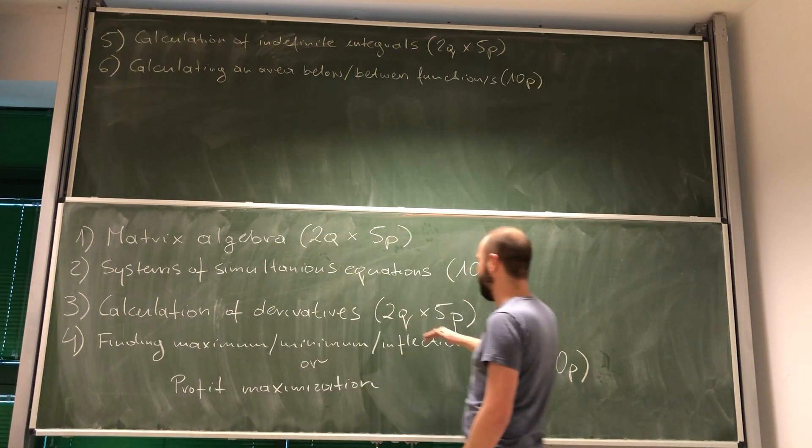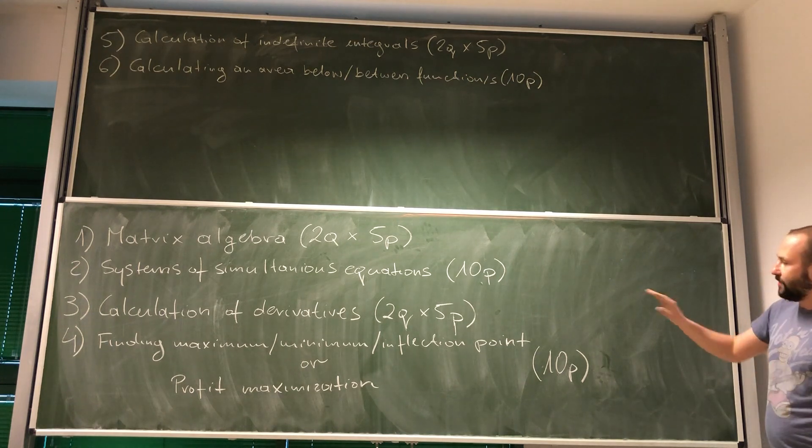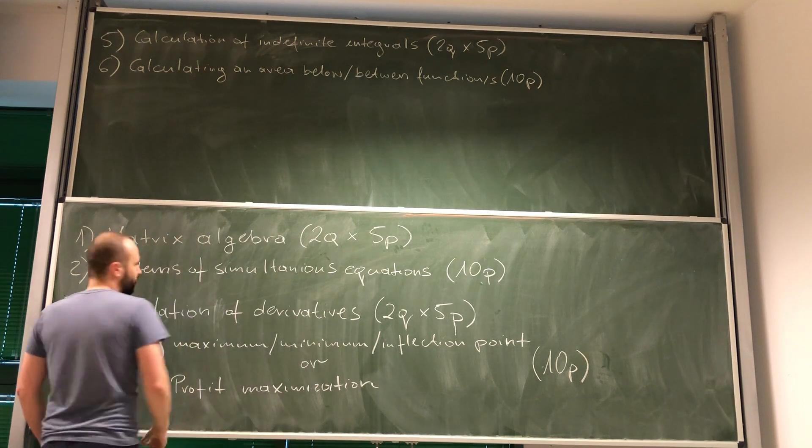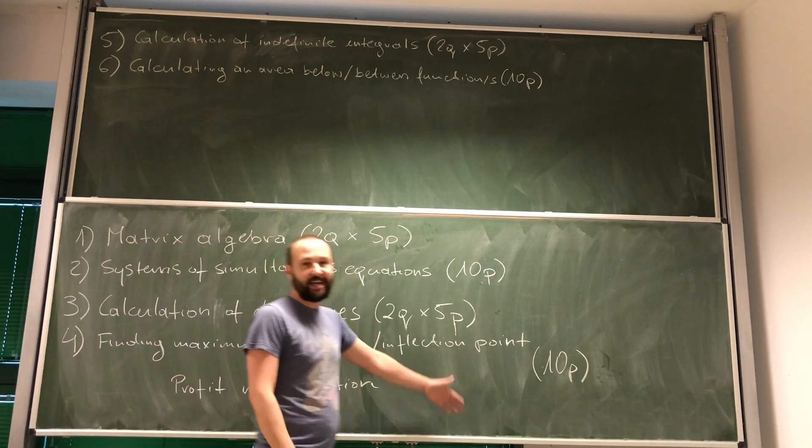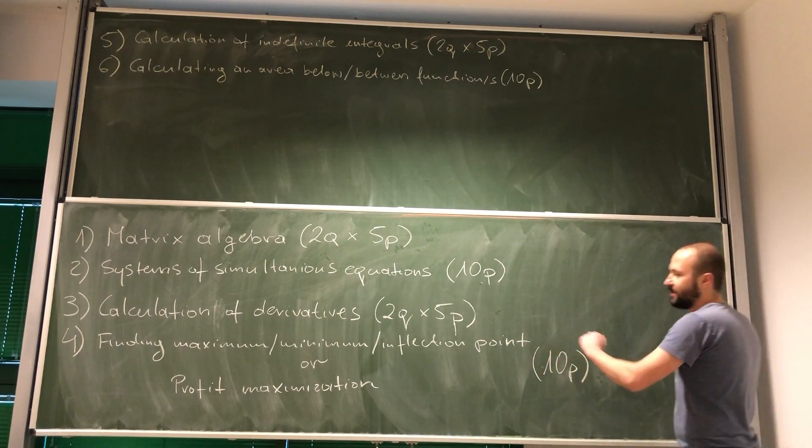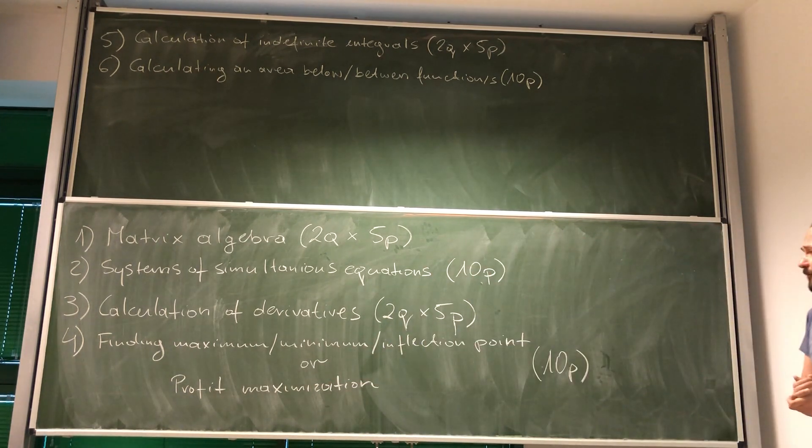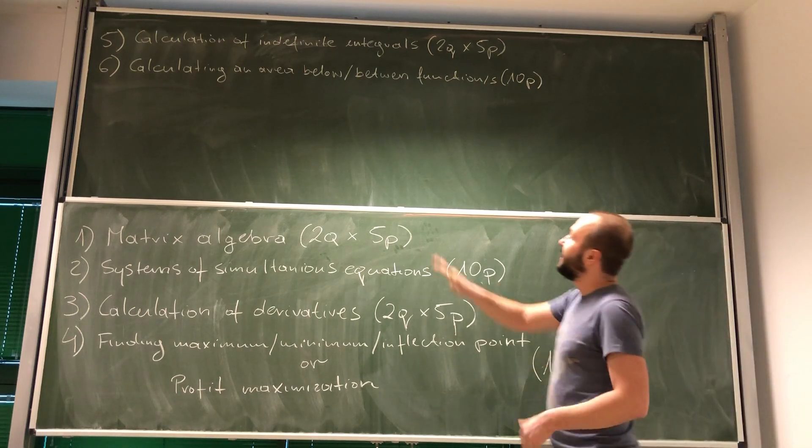Then in section number three, you will have two questions in which you have to calculate a derivative. Each of these derivatives is worth five points. Then in section number four, you're going to have to find maximum, minimum, or inflection point of some function, or find the final level of production that maximizes the profit in a typical problem that we did during the class. This is going to be worth 10 points.